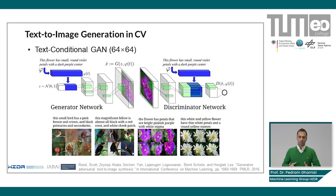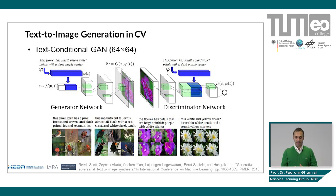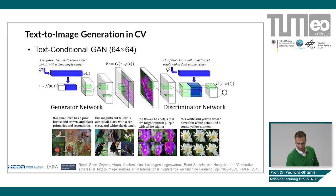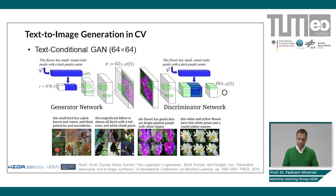Text-to-image generation — the name already says everything. We want to produce realistic images from text descriptions. The most pioneering work in this area came from the computer vision community and was based on Generative Adversarial Networks, or GANs. In a GAN, we have two networks: the generator and the discriminator. In the generator, we try to produce realistic images based on the text prompts given as input. The discriminator then tries to differentiate between real and fake images. Through this min-max game between generator and discriminator, the generator learns to produce more realistic images to fool the discriminator. Here you can see some examples generated by this pioneering work, the text-conditional GAN, with output quality of 64 by 64 pixels.